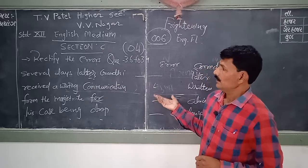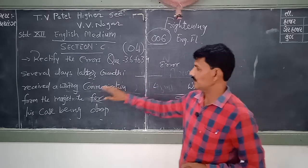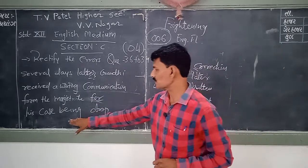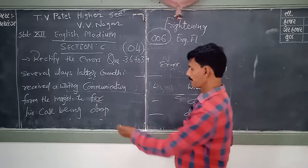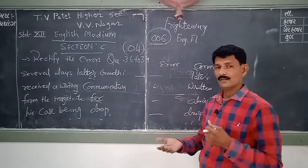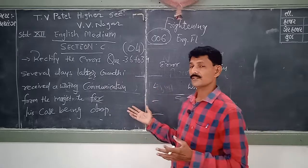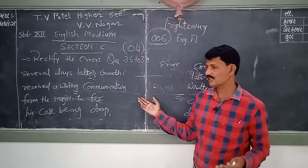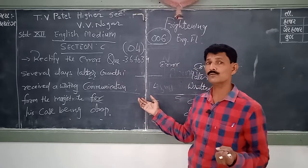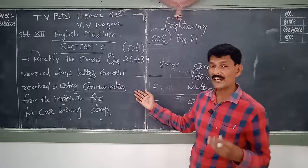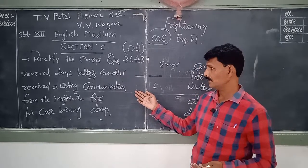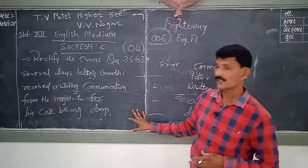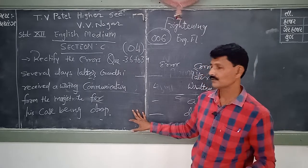Let's see. The sentence is: 'And several days later, Gandhi received a writing communication from the magistrate for his case being dropped.' As I said earlier, what should we do in order to find out this error? Let's repeat the passage, read the lines again, and try to read between the lines — find out the meanings of the hard words and convey the proper message of those lines. That will help you highlight the errors.